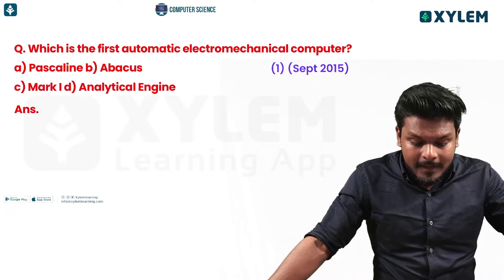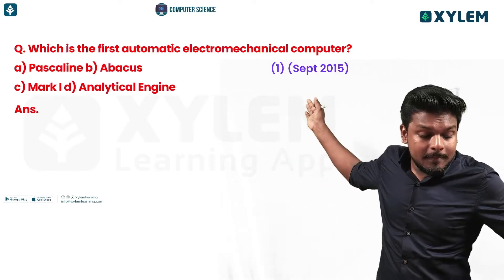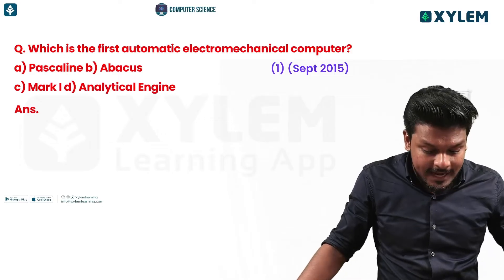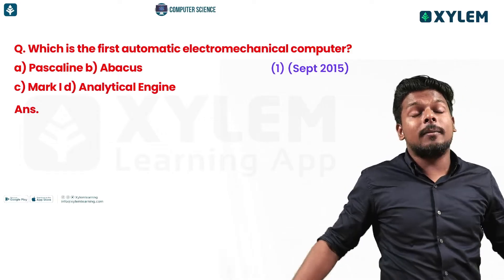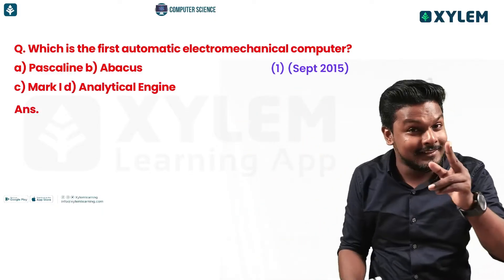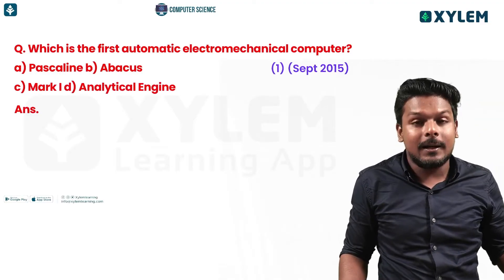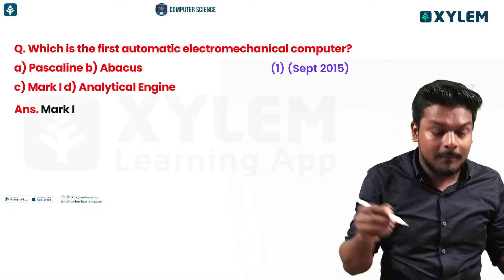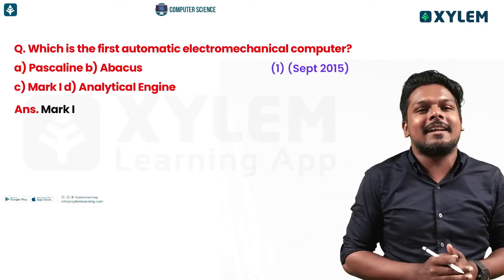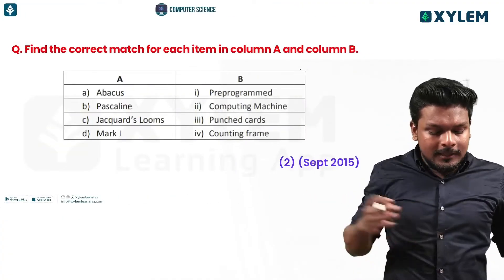Next question: which is the first automatic electronic computer? We have options: Pascaline, Abacus, Mark I, and Analytical Engine. The Analytical engine is not the first. Mark I is the answer — Mark I is the first automatic electronic computer.